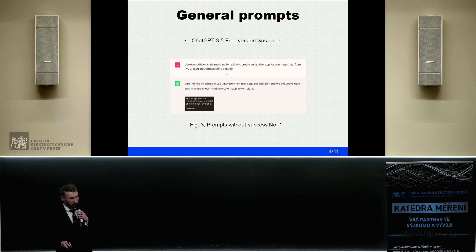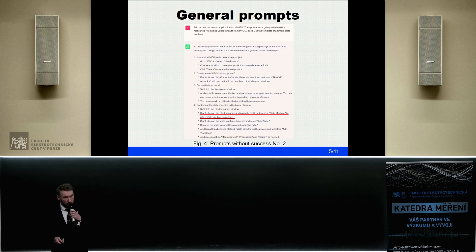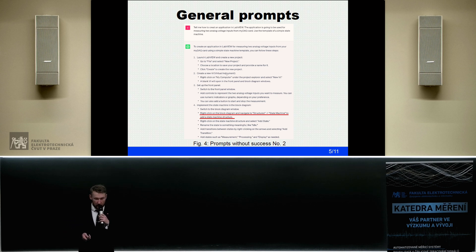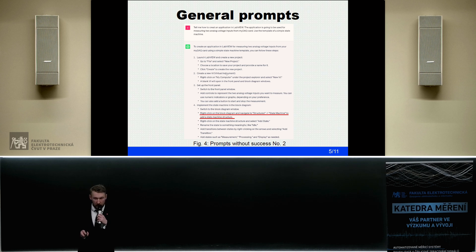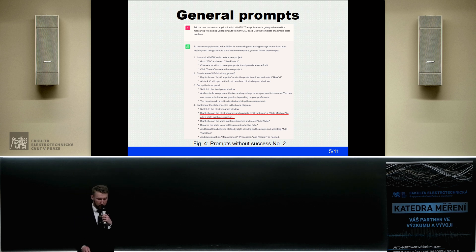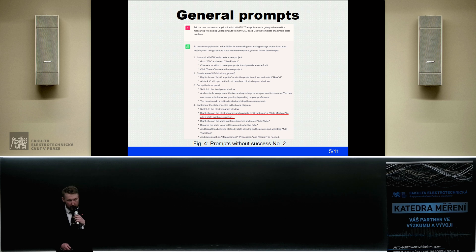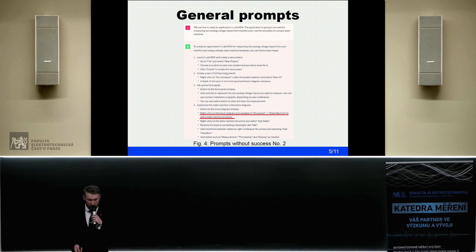ChatGPT was unable to generate a picture of a program, which is something I expected. So I asked it to help me create a step-by-step tutorial to create such a program. The prompt was again quite general — I asked it to help me build only the measurement part with a simple state machine template. It was willing to help, and the first few points were promising. But in the fourth point, it advised me to right-click on the block diagram and navigate to structures and add a state machine structure. There is no such function — it just made up words. So this step-by-step tutorial was also a failure.